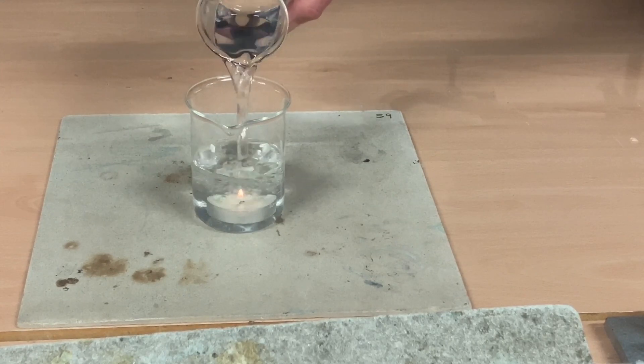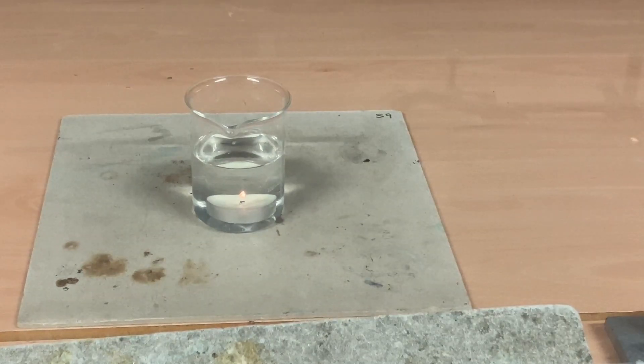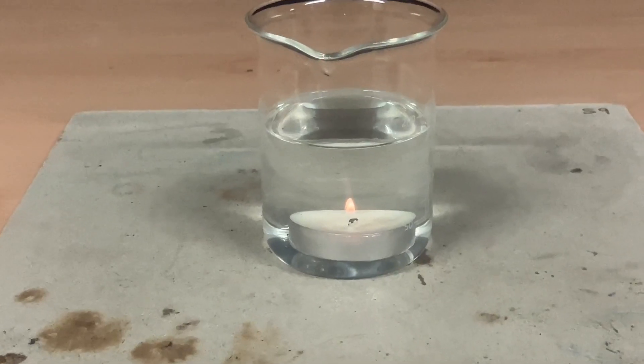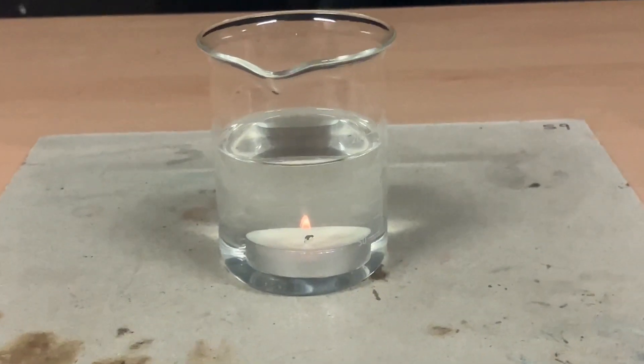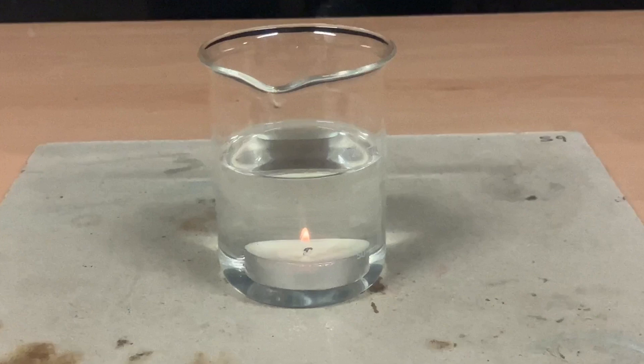Because of refraction by the water the size and position of the candle in the beaker appears to change slightly, so rather than pouring the water in live in front of your students you might prefer to have it there already and carefully adjust the position of the beaker and the candle so that the wick perfectly lines up with the reflected image of the flame.